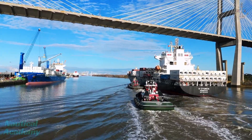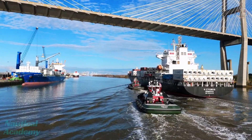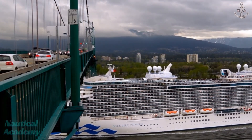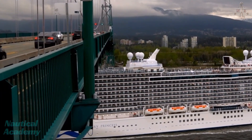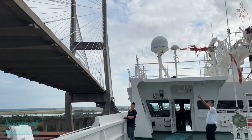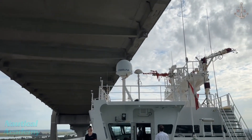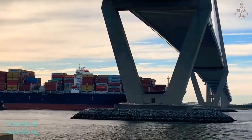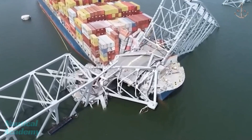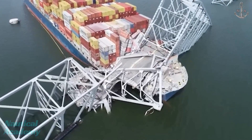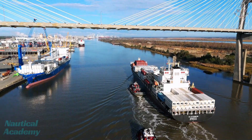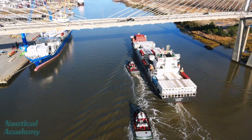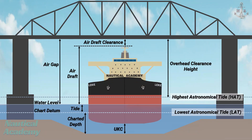Have you ever seen a massive container ship or cruise liner sail under a bridge and wondered how do they know it would fit? It looks like a tight squeeze, and that's because it often is. One miscalculation could lead to a catastrophic accident. So how do they do it? The answer lies in some fascinating maritime principles, and we're going to break them down using this simple diagram.